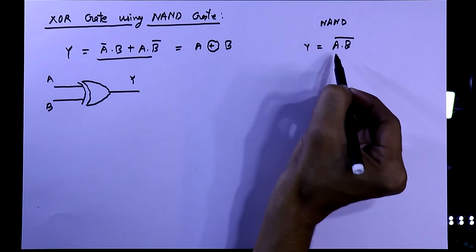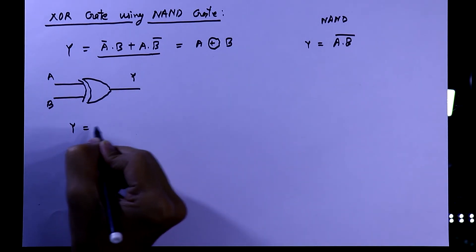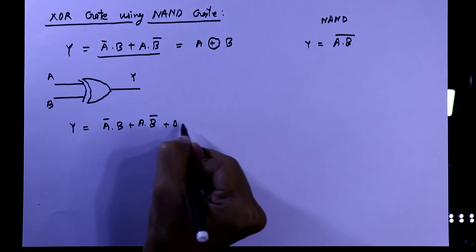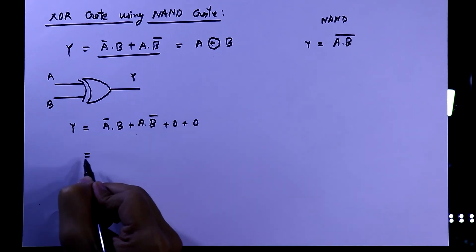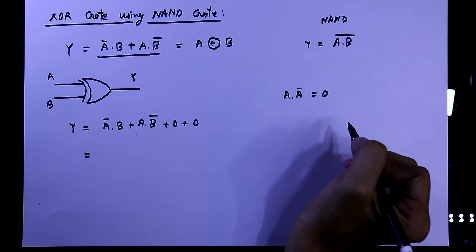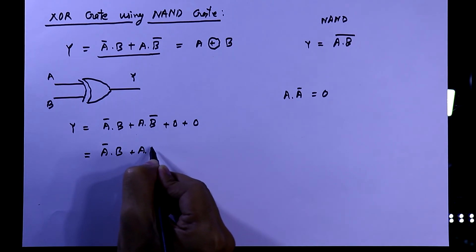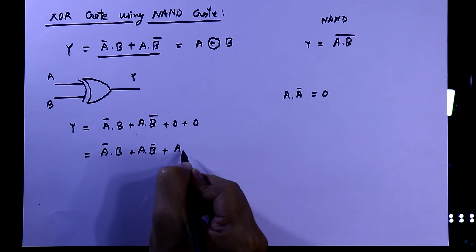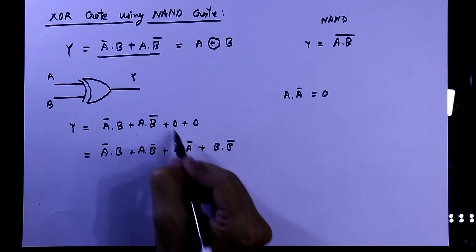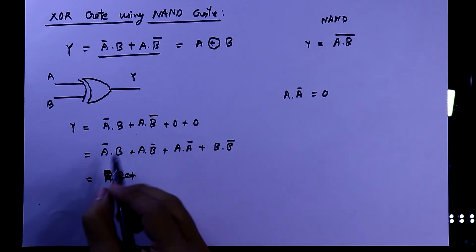We have to write this XOR equation in NAND gate pattern. Writing the equation: Y equal to A-bar dot B plus A dot B-bar plus 0 plus 0. We know that A dot A-bar is equal to 0, so A-bar B plus A dot B-bar plus A dot A-bar plus B dot B-bar — we can write it, no problem.